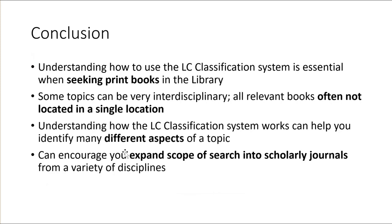So we can see that understanding how to use the Library of Congress classification system is essential when seeking print books in the library. It doesn't really affect e-books, of course — e-books are simply made available through the library catalog. Some topics can be very interdisciplinary, and so all relevant books will often not be located in a single Library of Congress location. But understanding how the LC classification system works can help you identify many different aspects of a topic, some of which may interest you more than others, and can encourage you to expand the scope of your search into scholarly journals representing a wide variety of disciplines.